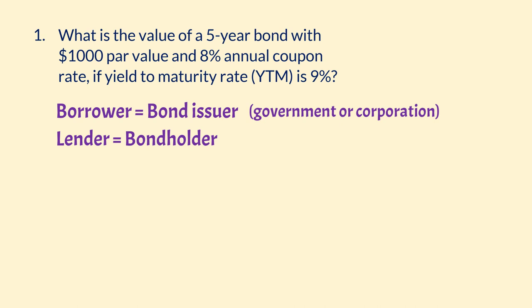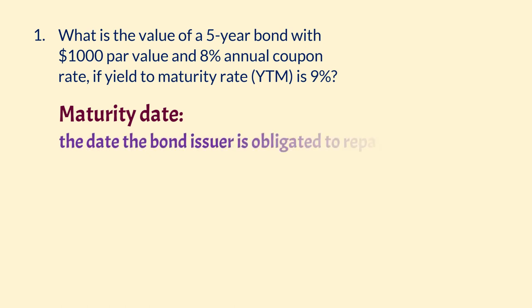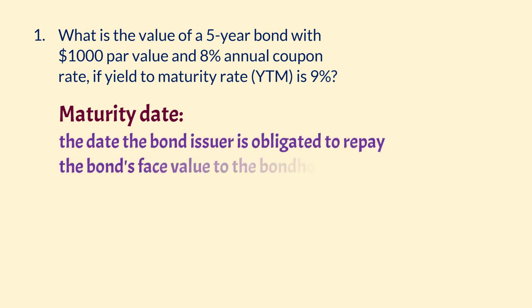Let's define some key terms in this example. Maturity Date: this is the date the bond issuer is obligated to repay the bond's face value to the bondholder. Maturity is 5 years in this example.